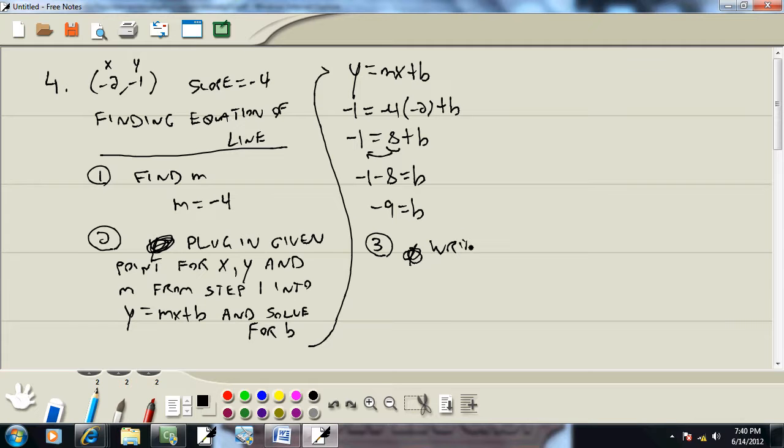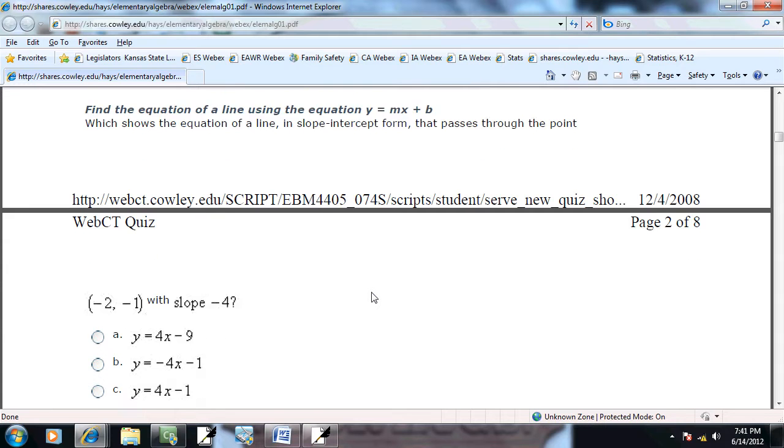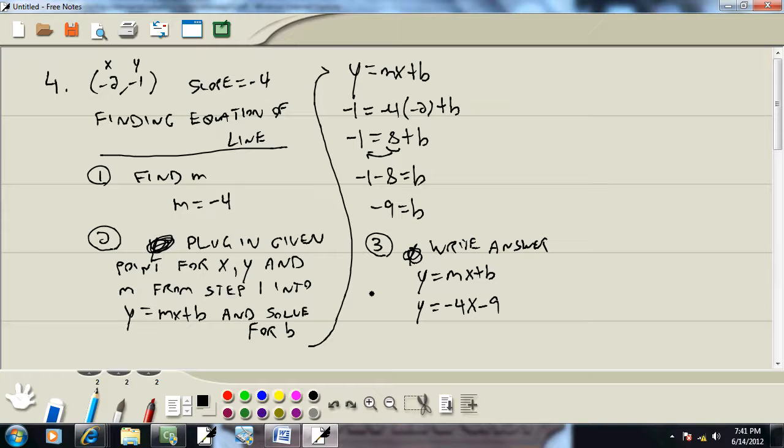Step 3 is we want to actually write our answer. So we got y equals mx plus b. m is negative 4, so we got negative 4x. And b is negative 9. So our answer is y equals negative 4x minus 9. Negative 4x minus 9. Looks like D, as in David.